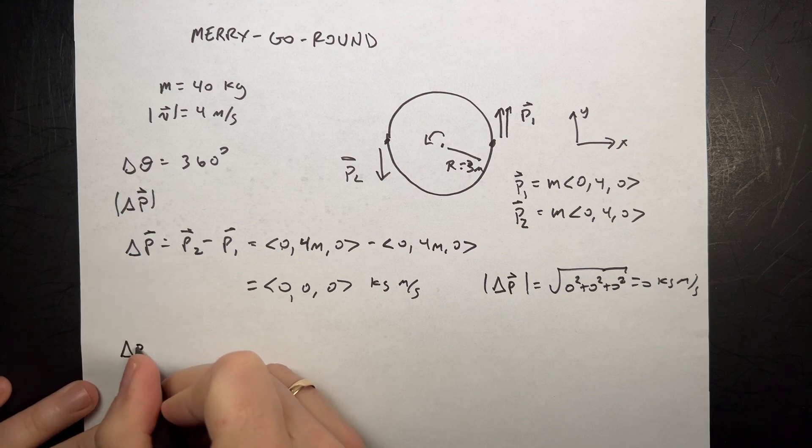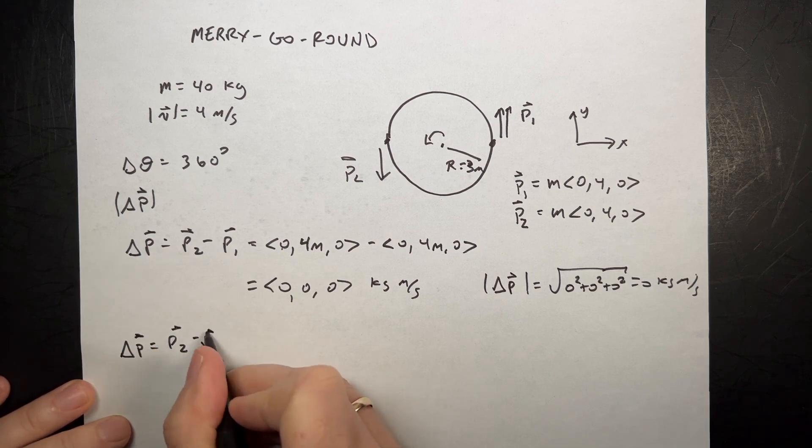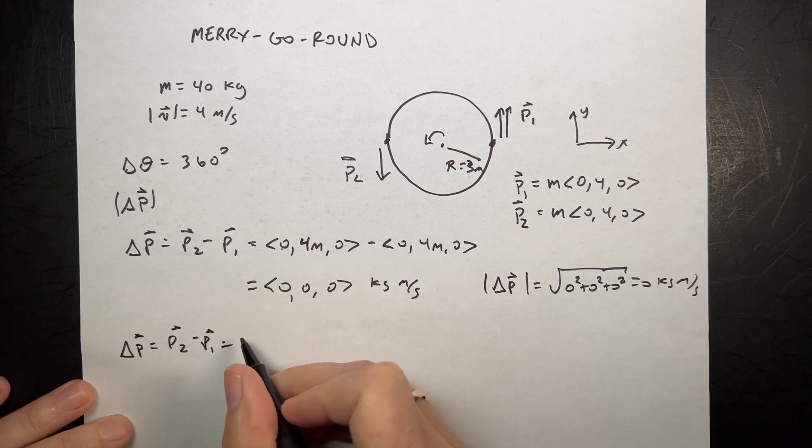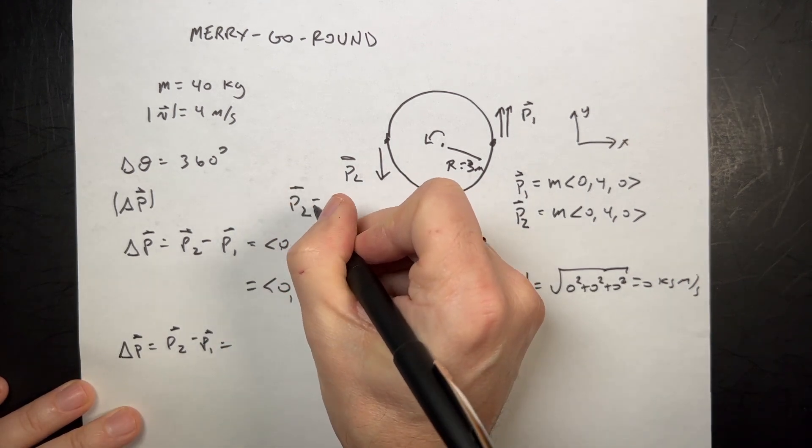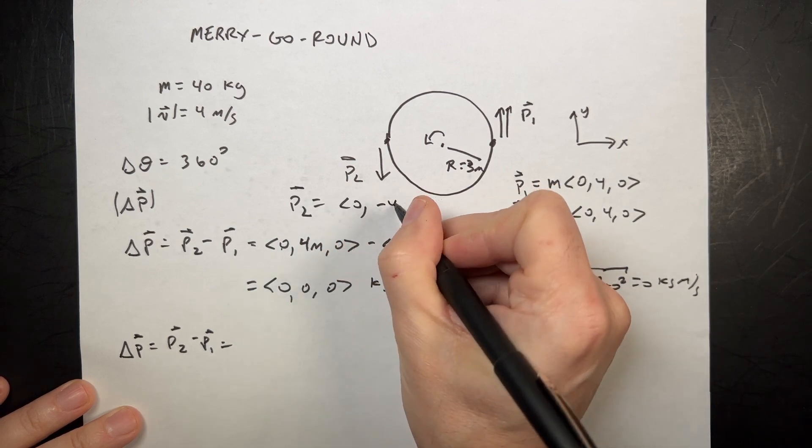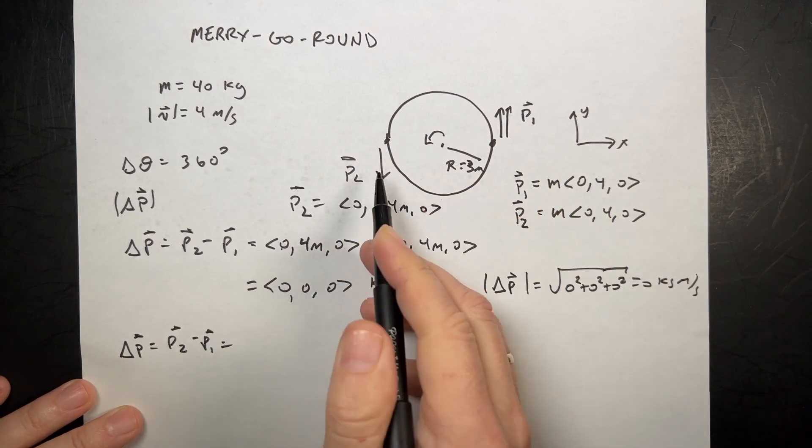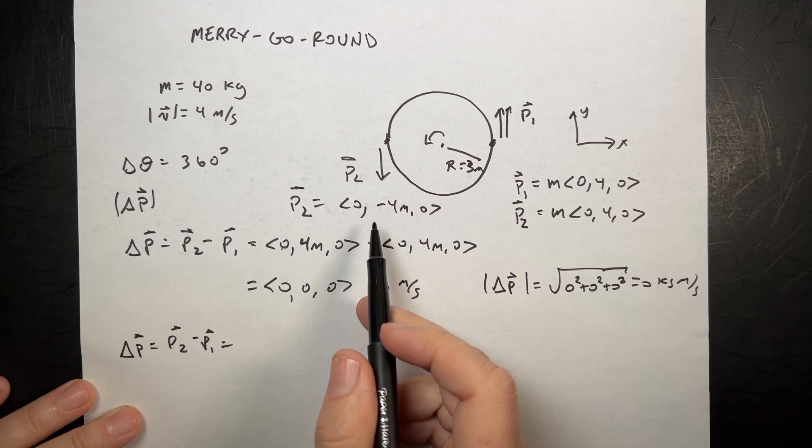So delta P in this case is going to be P2 minus P1 again. But now we have a different value for P2. I guess I should write that. P2 is going to be equal to 0, negative 4m, 0. The child is moving in the negative y direction.